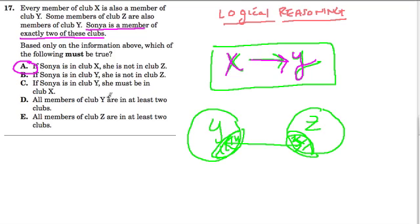But let's look at the other ones just to clarify why they don't make sense. If Sonia is in Club Y, she is not in Club Z. Well, like we said, some people in Club Y are also in Club Z.